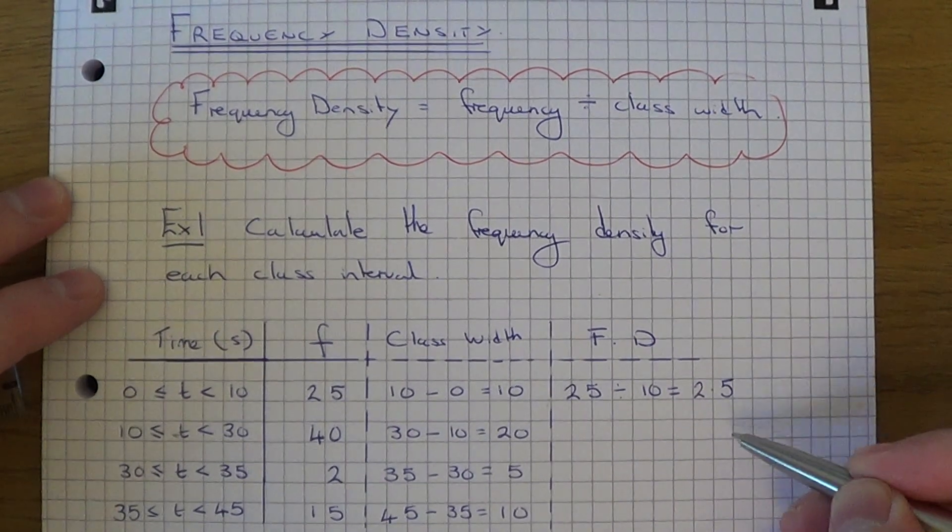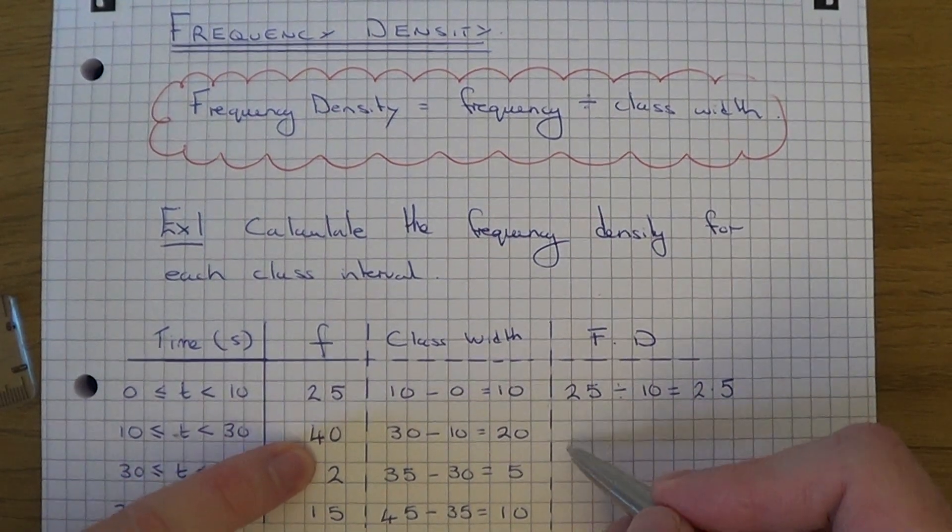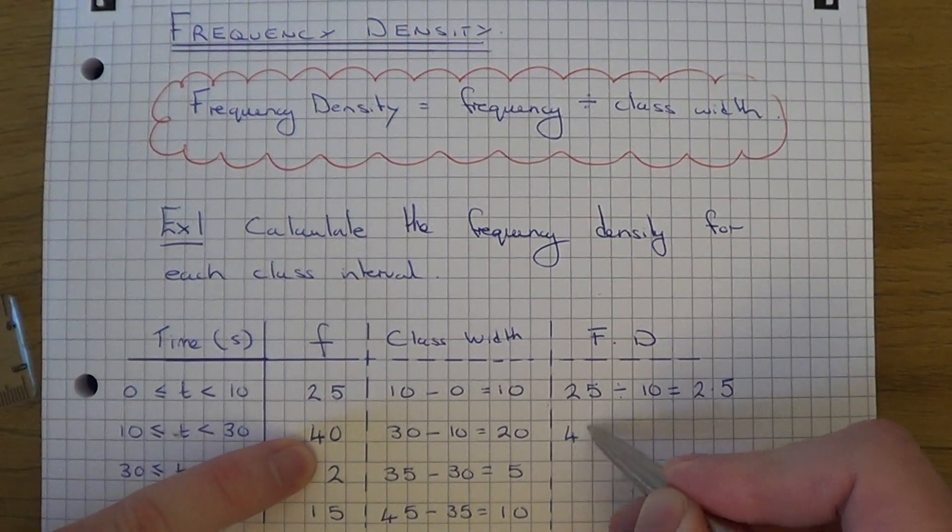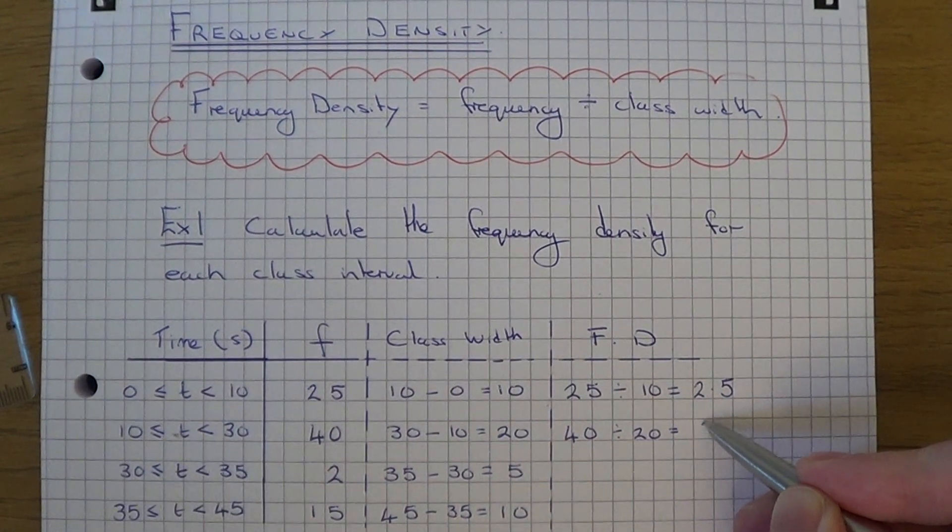If you're having trouble working these out, just do it on your calculator. For the second group, it will be 40 divided by 20, which is 2.